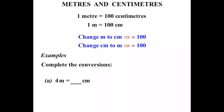We are starting with metres and changing it to centimetres. And we can see that if we do that we are going to times by 100. So we have 4 times 100, which of course is 400. So 4 metres equals 400 centimetres.